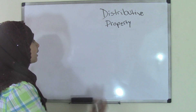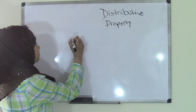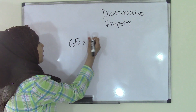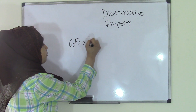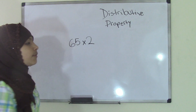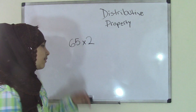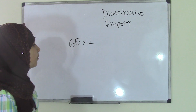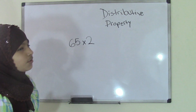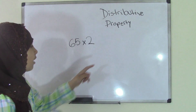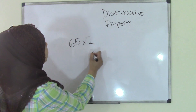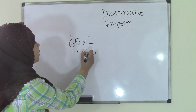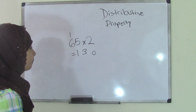Let's say you are given the problem 65 times 2. Now, some of us can, if you just look at the problem, you can solve it in your brain. We know that 5 times 2 is 10, so that would be a 0 here and then add a 1, so we know the answer would be 130.